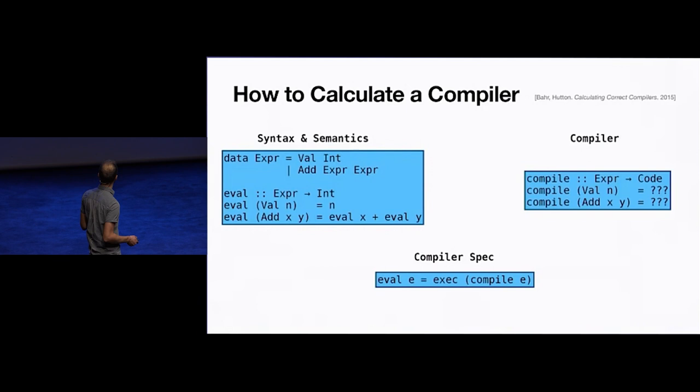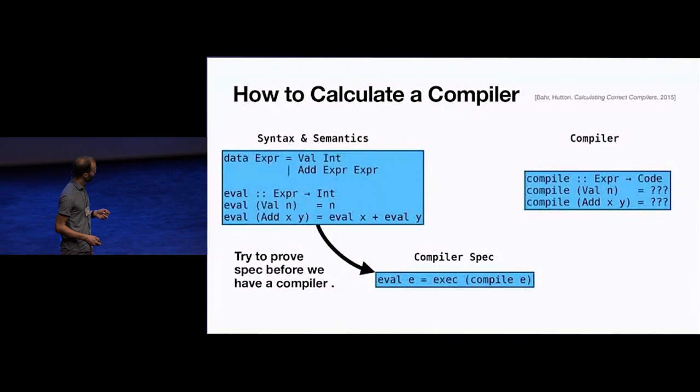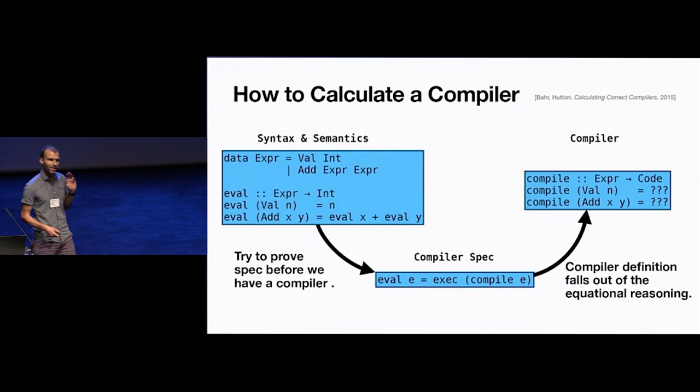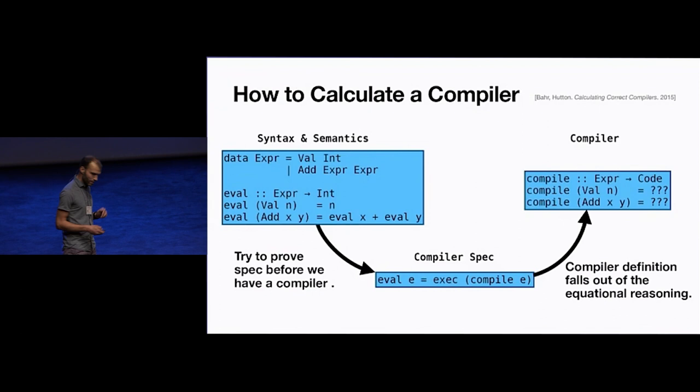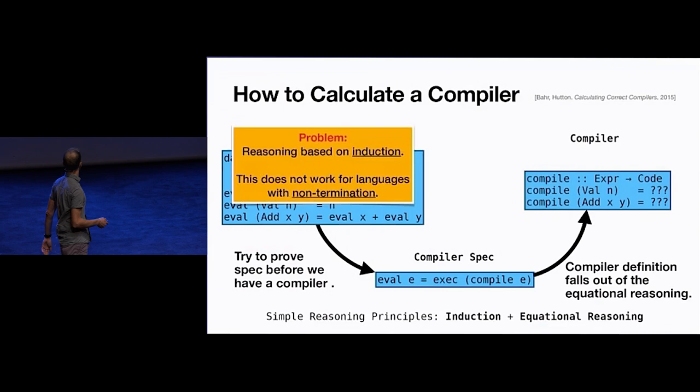The calculation approach does this by starting at the proof. We're going to start proving this correctness theorem before we even have the compiler. Then as we do this proof, the definition will fall out of the calculation. This might seem like black magic, but the nice thing is that it uses very simple reasoning techniques: only induction and equational reasoning.